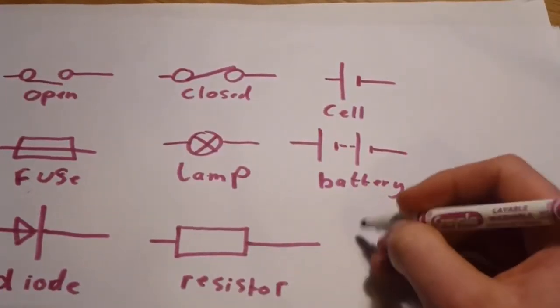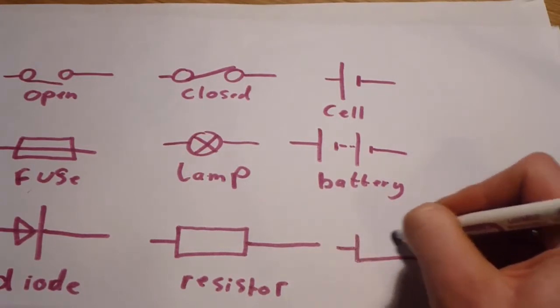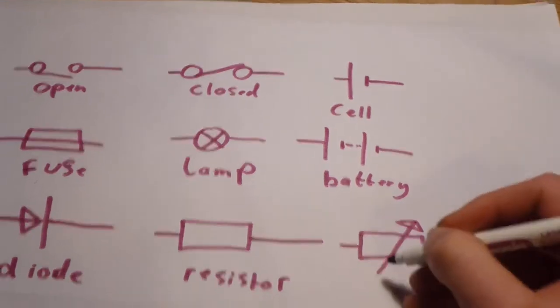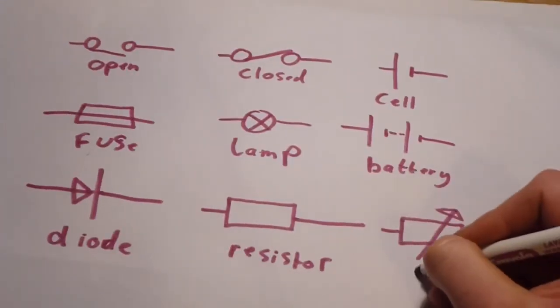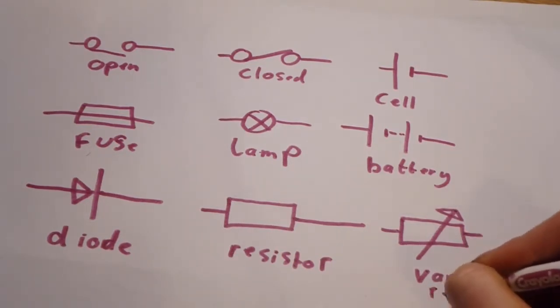After the resistor, we have a variable resistor, which is very similar to a resistor but has an arrow going through it.